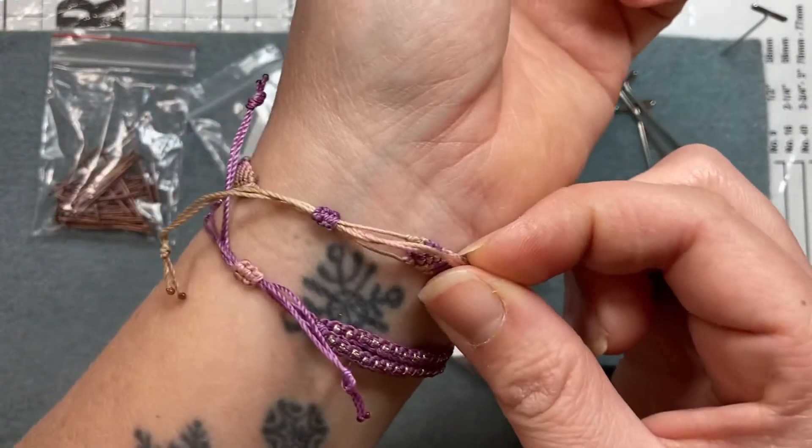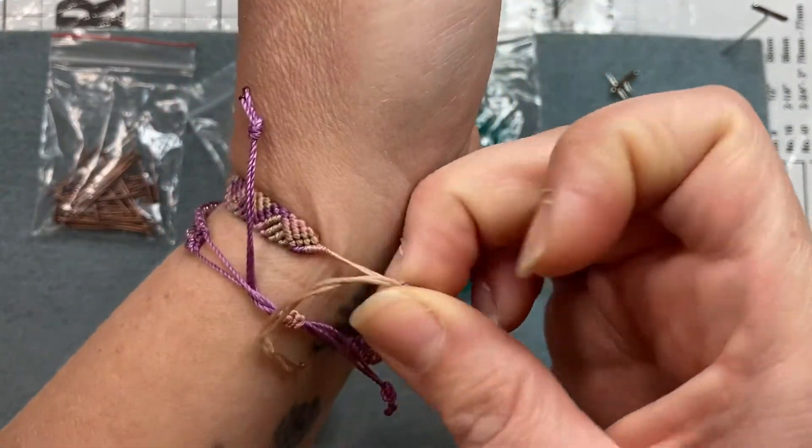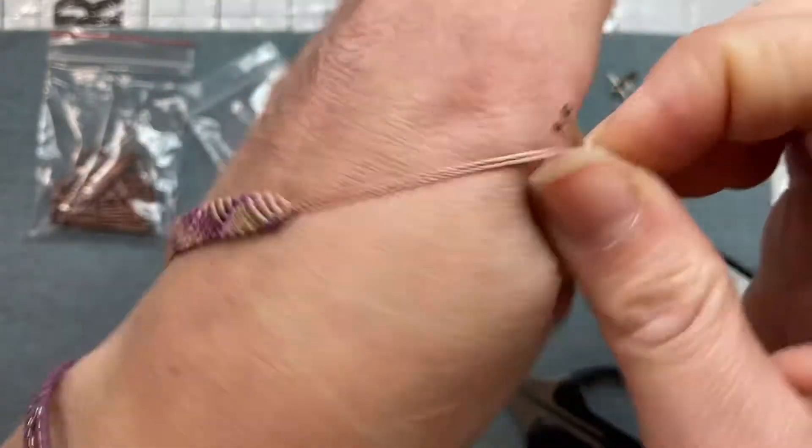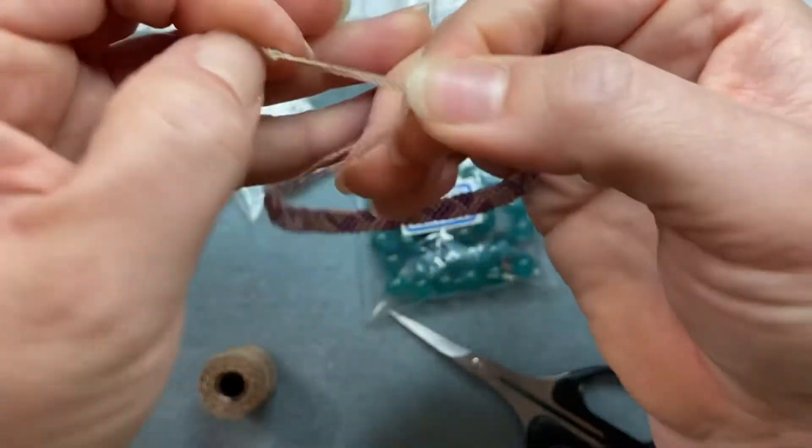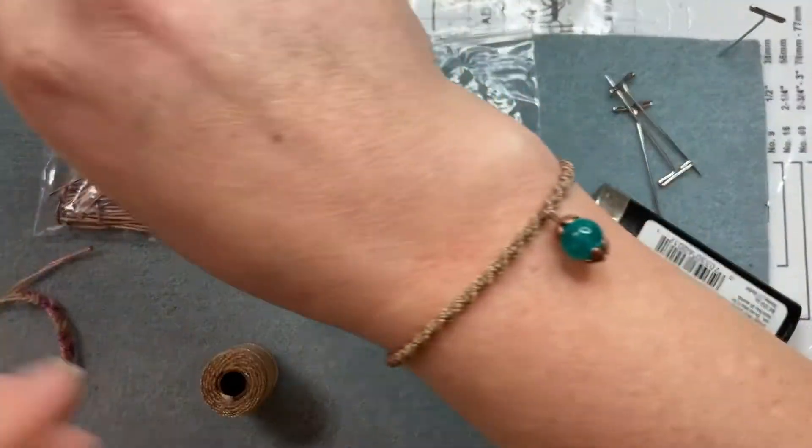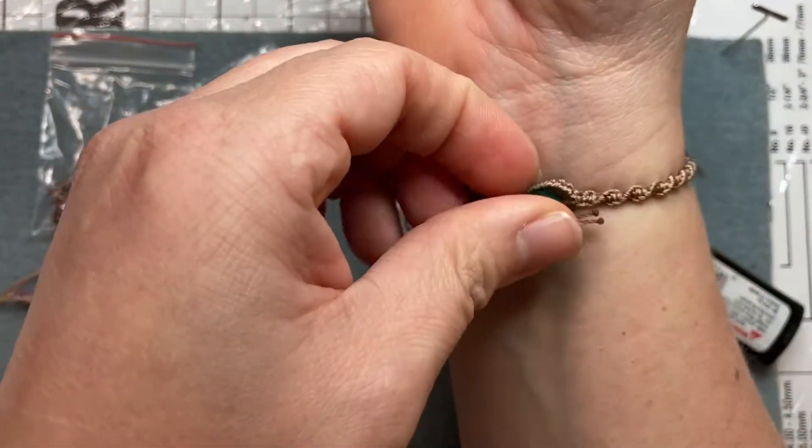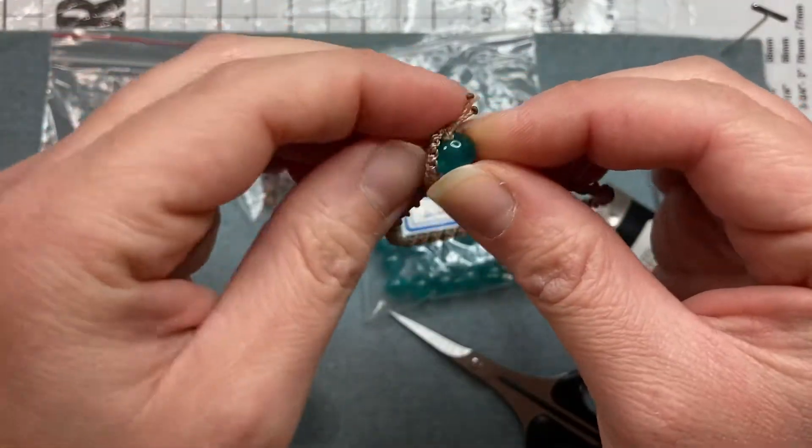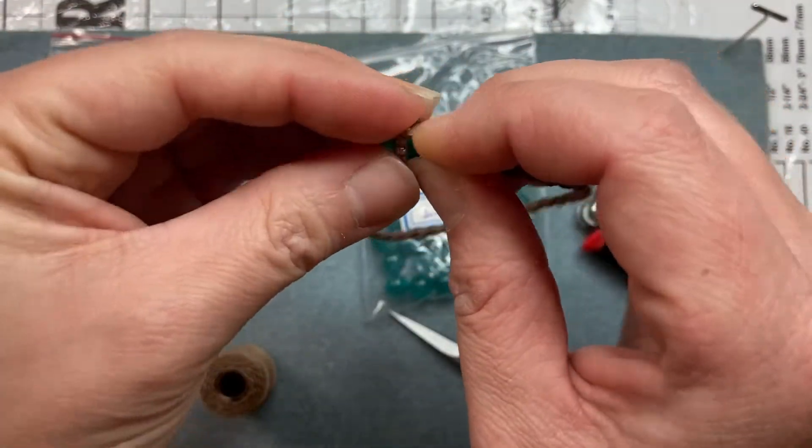Normally I show you how to do a square knot closure that allows you to pull the ends to loosen, to take it off, and then pull to tighten. This one is different in that all you have to do is pull off the bead and attach the clasp back together.